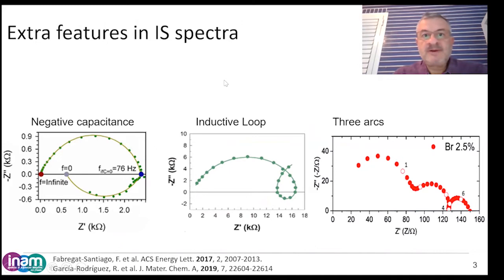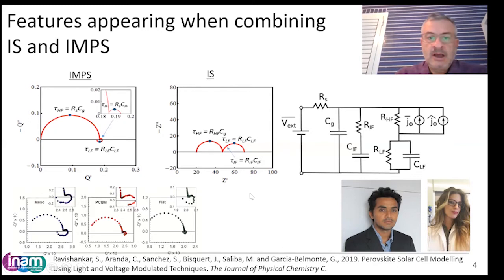However, impedance spectroscopy spectra of metal halide perovskites show different features like negative capacitance, inductive loops, or more than two or three arcs. These features cannot be described by this simple circuit with two capacitances—it needs more.